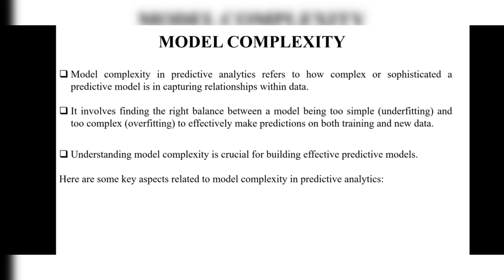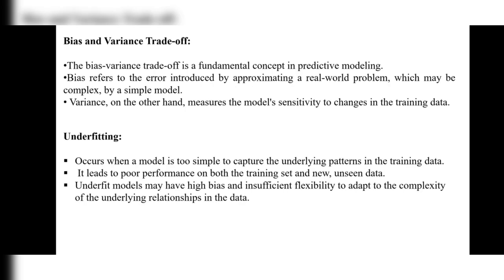Key aspects of model complexity include: first, the bias-variance trade-off — a fundamental concept in predictive modeling. Bias refers to the error introduced by approximating a complex real-world problem with a simple model. Remember: bias is associated with a simple model, variance with a very large model. Variance measures the model's sensitivity to changes in the training data.